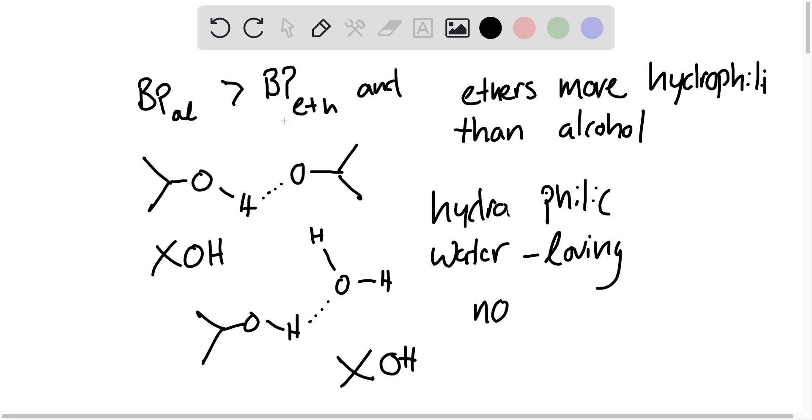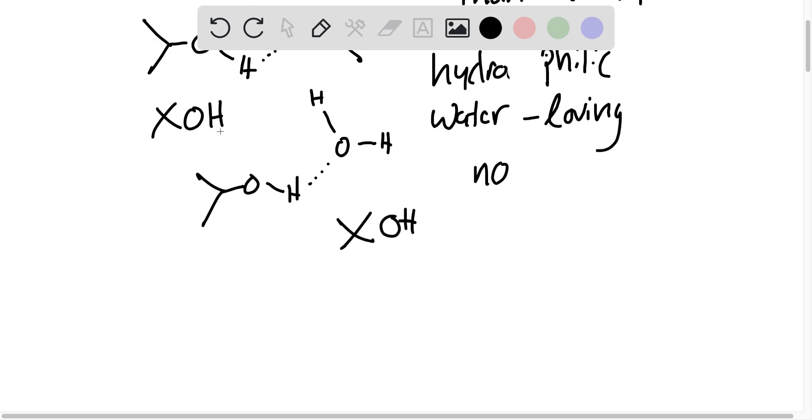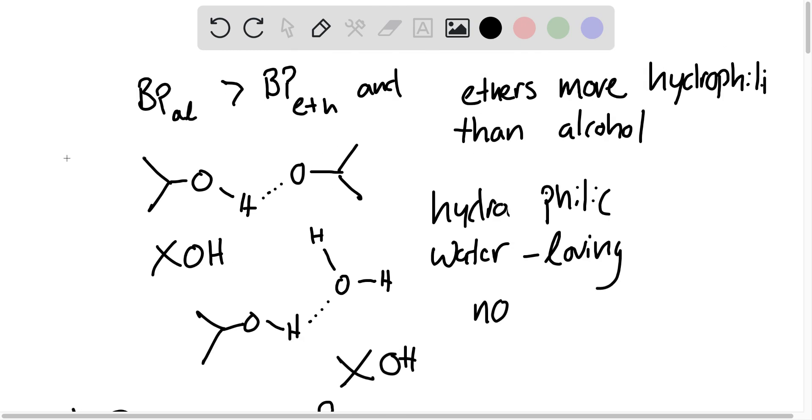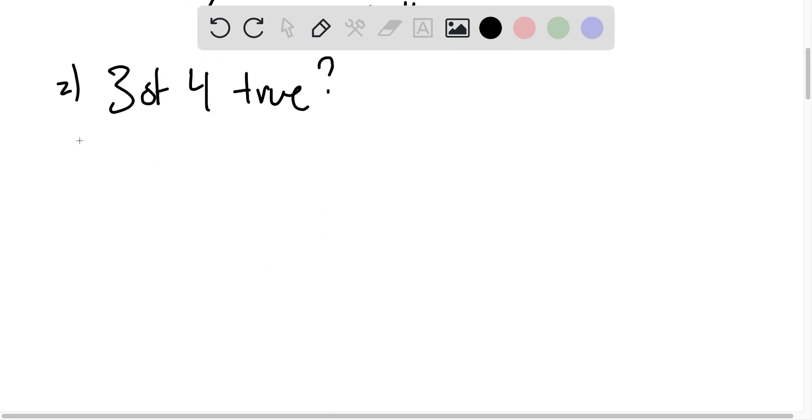The next statement is three of the four responses, three of these four responses are true. So we've got to look at the remaining responses to ascertain whether that's true or not. Three of four true. Let's call this number two. Let's call this number one. So one was false. Two, we don't know yet. What about three?